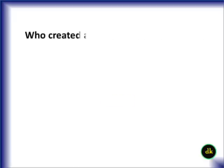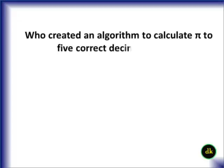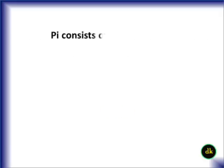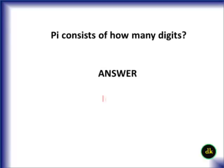Who created and allowed them to calculate Pi to 5 correct decimal places? Pi consists of how many digits? Infinity.